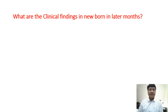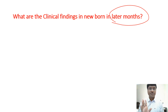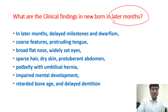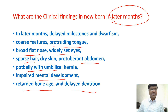In the later months, if hypothyroidism is present in a newborn, manifestations include delayed milestones — very important — dwarfism, coarse features, protruding tongue, broad flat nose, widely set eyes, sparse hair, dry skin, protuberant abdomen, pot belly with umbilical hernia, impaired mental development, retarded bone age, and delayed dentition.